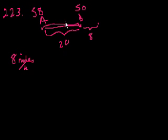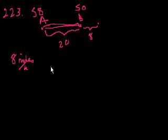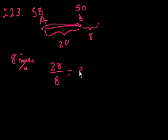You could just pretend like you are in car B and think that you are stationary — you ignore the fact that the world is speeding behind you — and you just see car A moving at 8 miles per hour. If you have to go 28 miles and you're going at 8 miles per hour, distance divided by rate equals time. That equals 3 and 1 half hours, which is choice E.